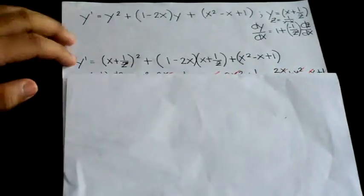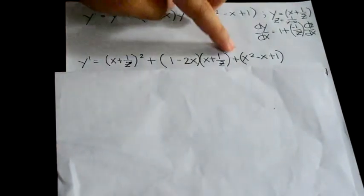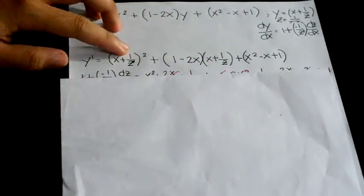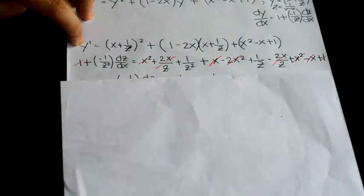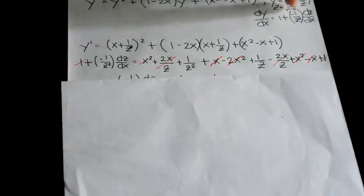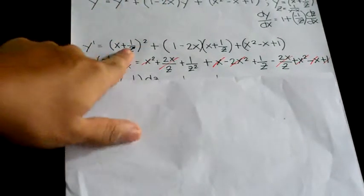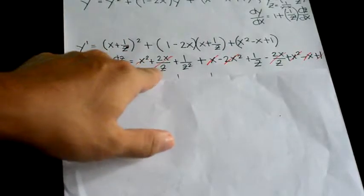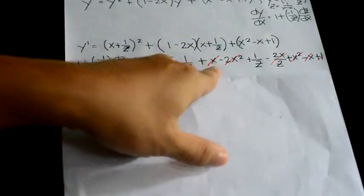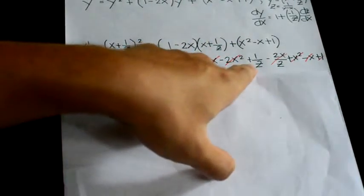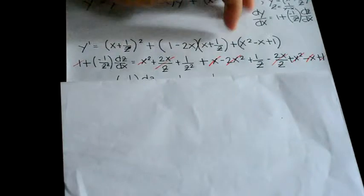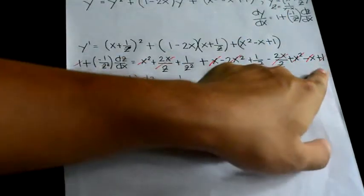Plus x squared minus x plus 1. Now manipulate the equation and you will get y prime, which is equal to 1 plus negative 1 over z squared times dz over dx. Expand: x squared plus 2x over z plus 1 over z squared, plus distributing you get x minus 2x squared plus 1 over z minus 2x over z.